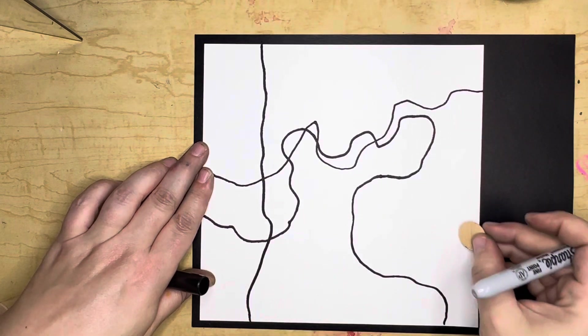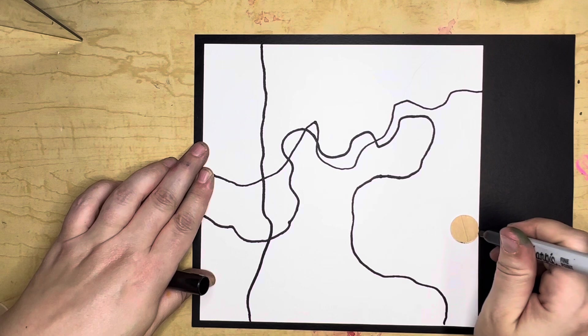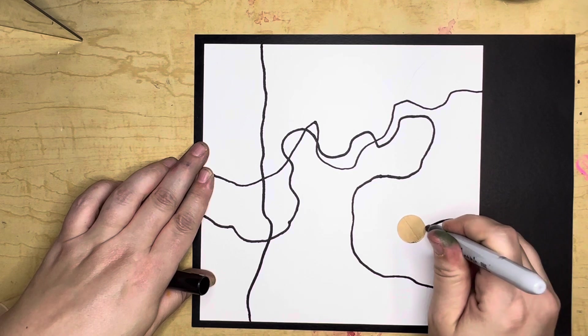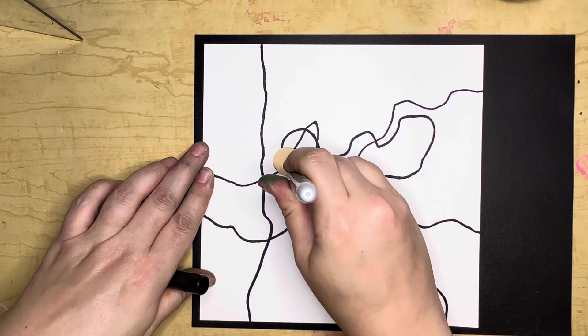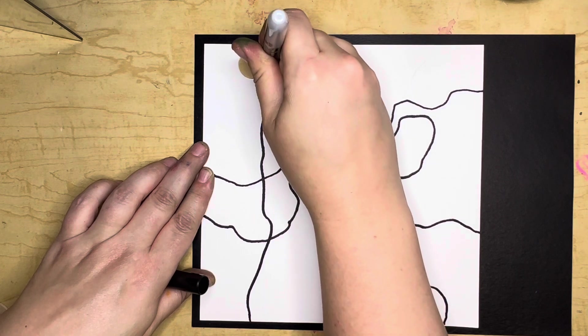That one went more directly across, maybe I need to slow it down. And this will be line number four. Four or five lines work well for the size that we are doing today.